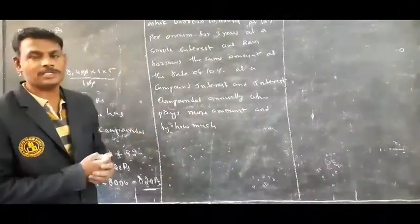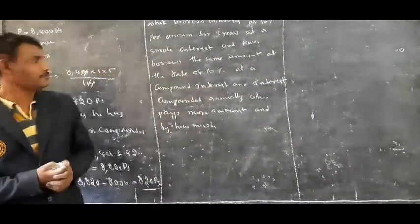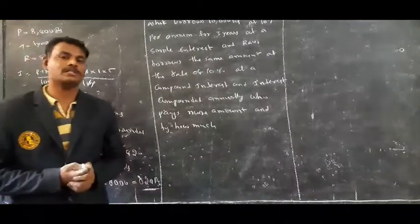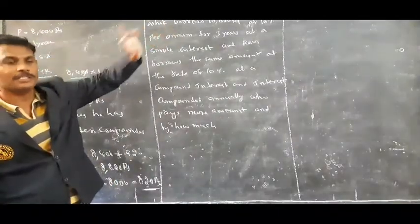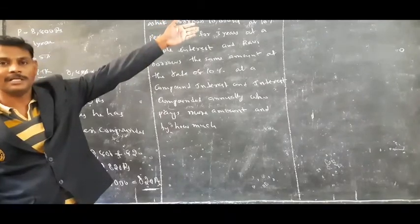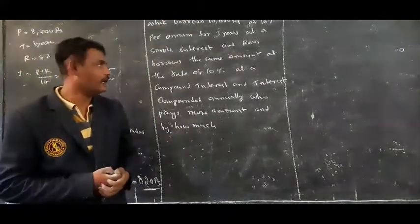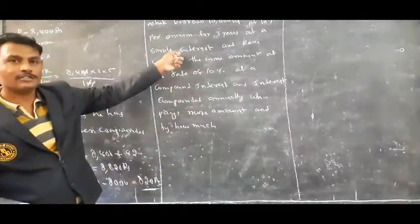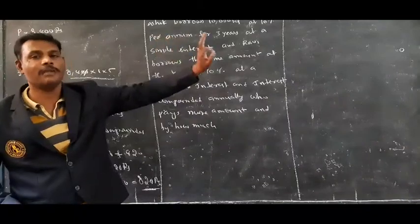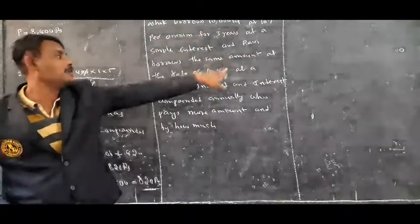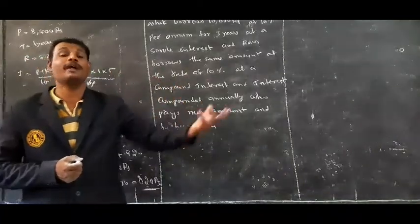Ashok borrows 10,000 rupees at 10% per annum for 3 years at simple interest. Ravi also borrows the same amount at the same rate of interest, but it is compound interest, and the amount is compounded annually.